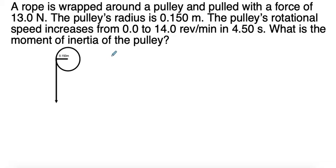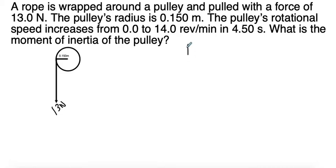For the second problem, a rope is wrapped around a pulley and pulled with a force of 13 Newtons. The pulley's radius is 0.150 meters. The pulley's rotational speed increases from 0.0 to 14.0 revolutions per minute in 4.5 seconds. What is the moment of inertia of the pulley?